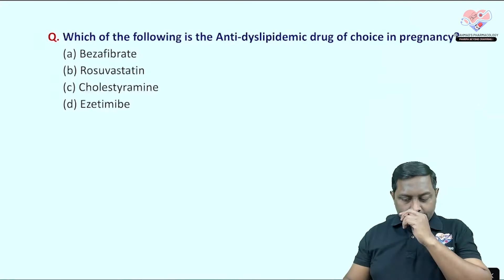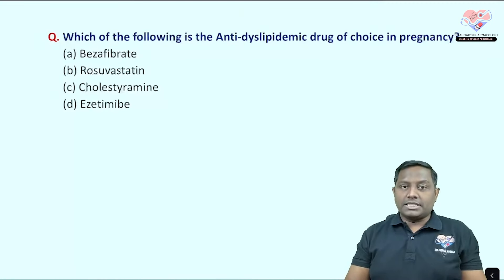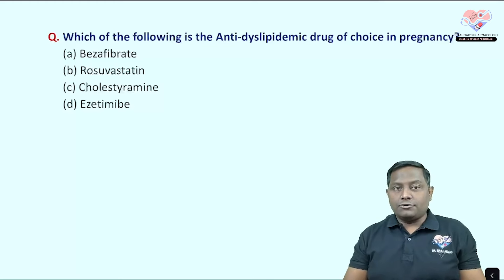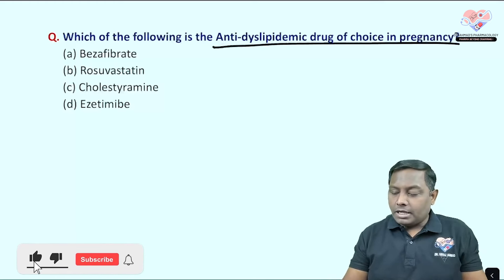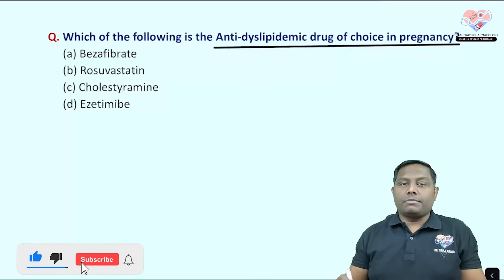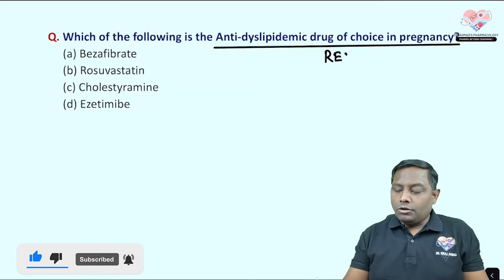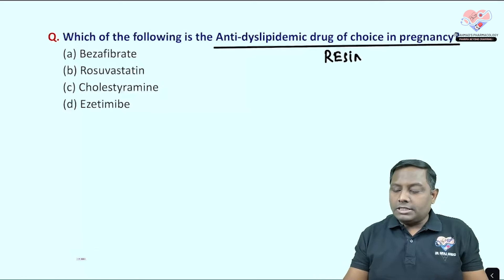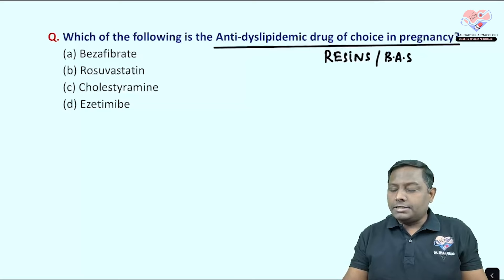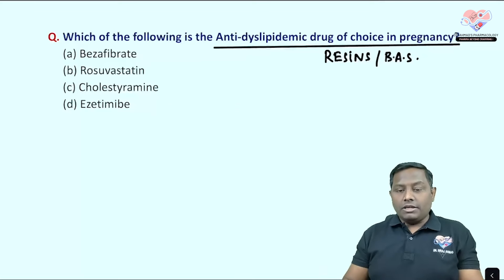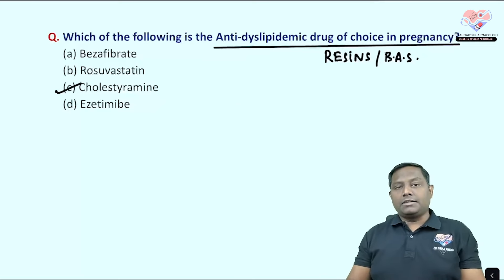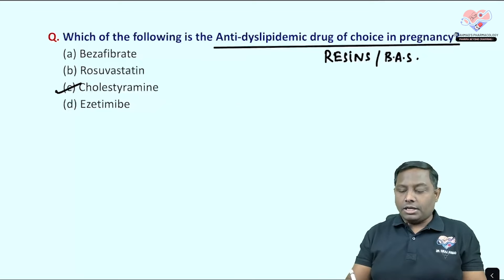The very first question today is: which of the following antidyslipidemic drug is considered the drug of choice in pregnancy? The answer is resins, also called bile acid sequestrants. Among the given choices, the bile acid sequestrant option is cholestyramine.